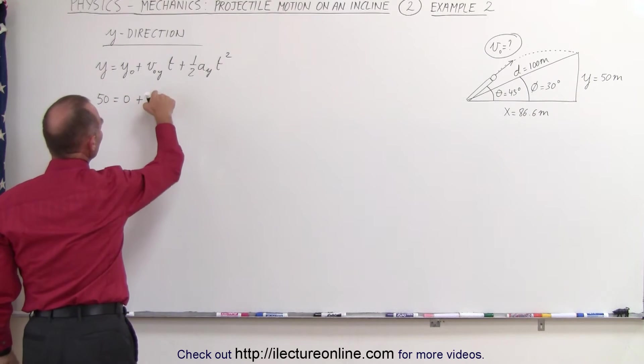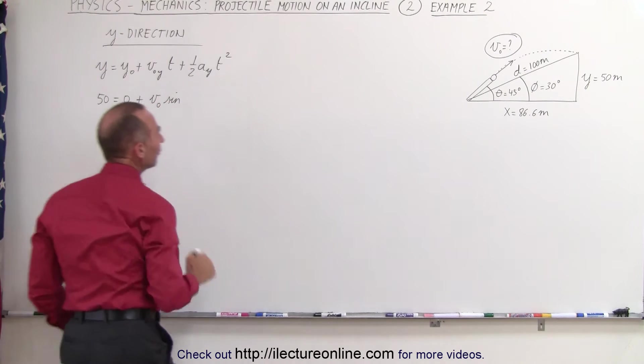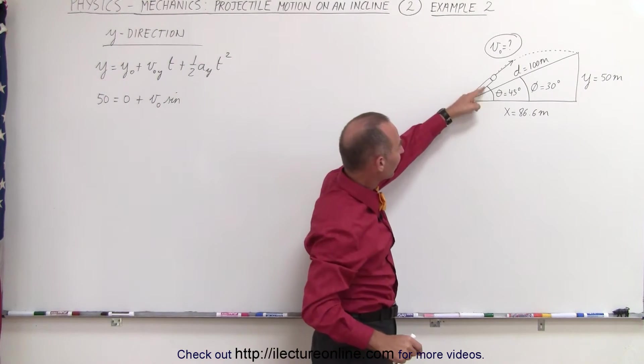So we can say that 50 equals zero plus the initial velocity in the y direction, which is v initial times the sine of 45 degrees.